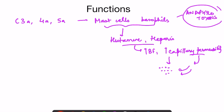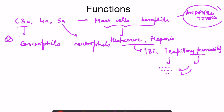The second function is chemotaxis. C3A is responsible for chemotaxis of eosinophils, and C5A is responsible for chemotaxis of neutrophils. So WBCs are not only carried by increased blood flow but are also actively attracted to the site of infection, and increased capillary permeability allows them to move out of blood vessels.